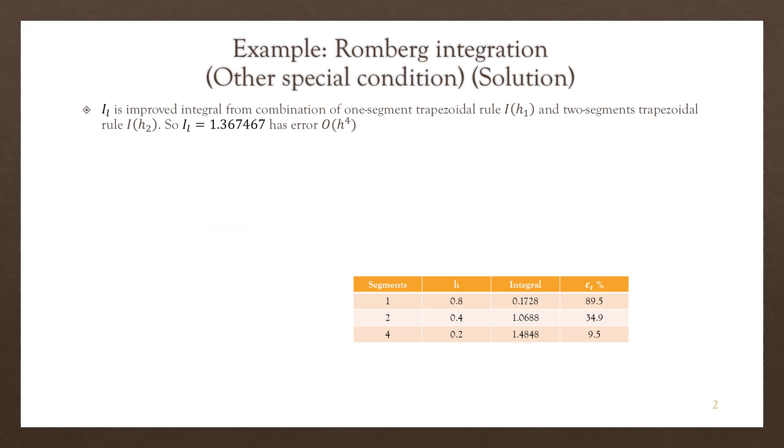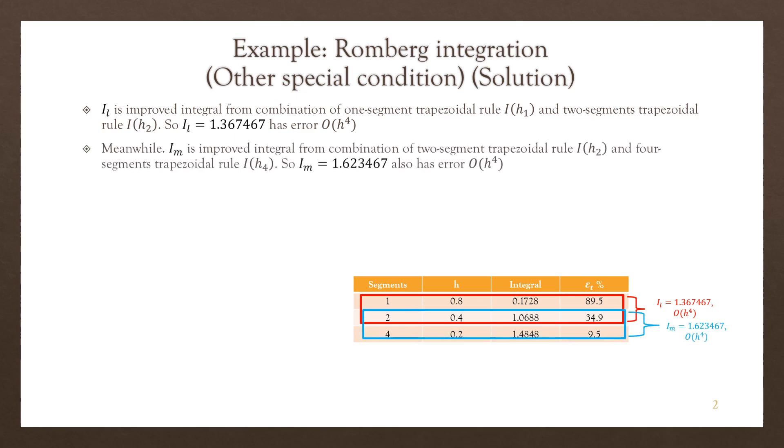The approximation I_l has error O(h⁴). It is the result of the combination of the first two rows, and the other integral, which is I_m, is the Romberg integration that combined between the final two rows.